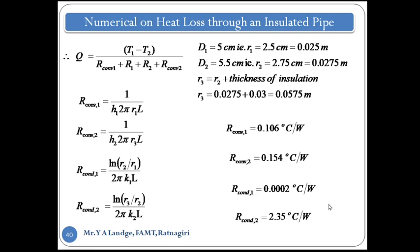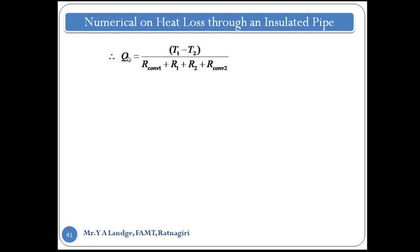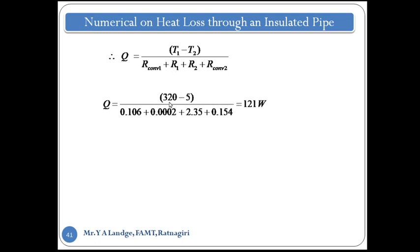Now substituting into Q = (T1 − T2) / (R_conv1 + R_cond1 + R_cond2 + R_conv2): Q = (320 − 5) / (0.106 + 0.002 + 2.35 + 0.154) = 315 / 2.612 ≈ 121 W. So the heat loss through the pipe per unit length is 121 W/m. The first part of the problem is complete.